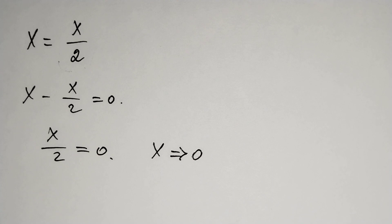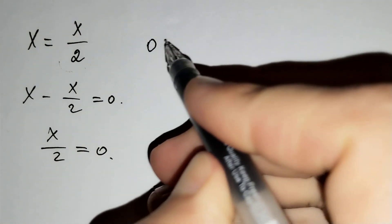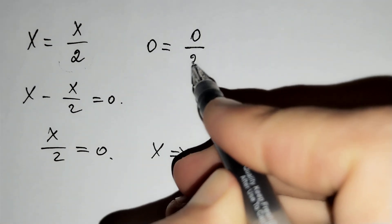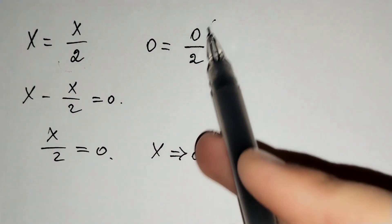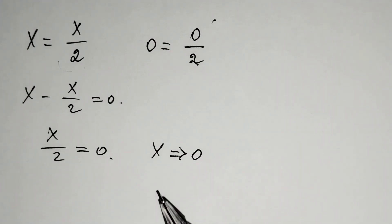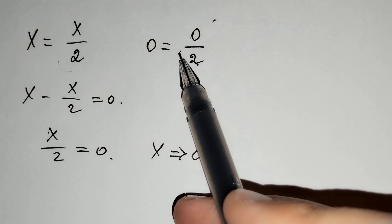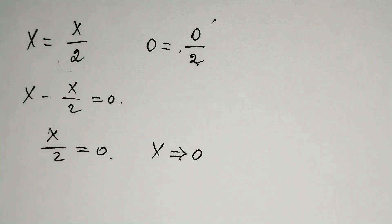And let's check it. 0 should equal to 0 over 2. We know that 0 over 2 equals 0, and 0 equals 0. This is true.